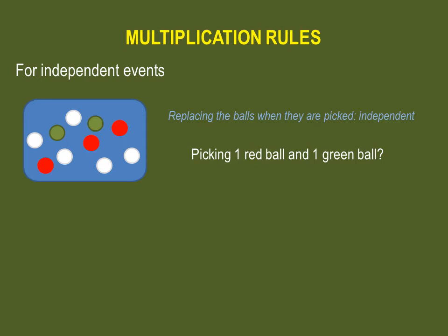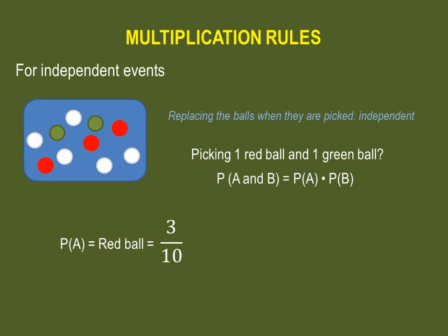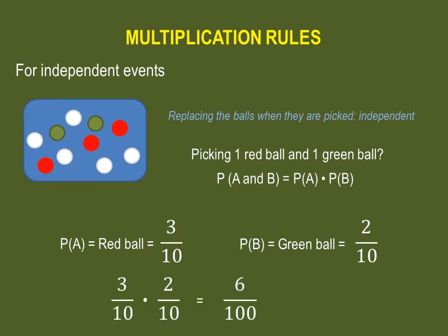What would be your probability of picking one red ball and then one green ball? Event A would be picking one red ball — you have three chances out of ten of picking a red ball. Now replace that red ball into the box and check out what your probability of picking a green ball would be. You have two green balls out of ten possible balls. So all you have to do is multiply three out of ten by two out of ten, which gives you six out of one hundred.